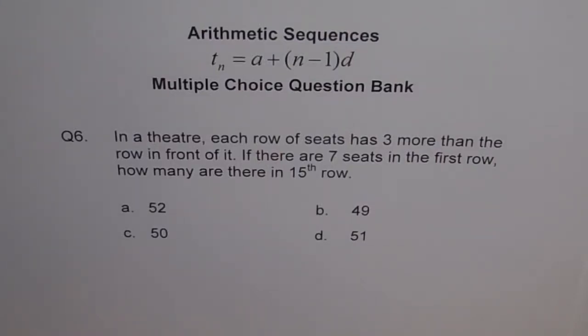Here is an application problem. Question number 6. In a theatre, each row of seats has 3 more than the row in front of it. If there are 7 seats in the first row, how many are there in the 15th row?